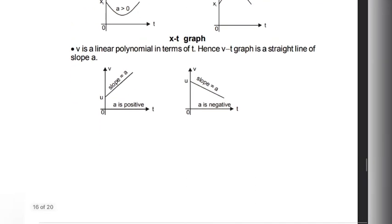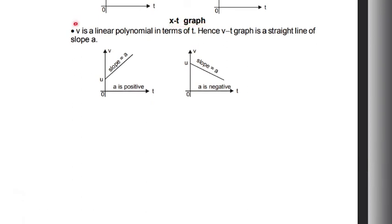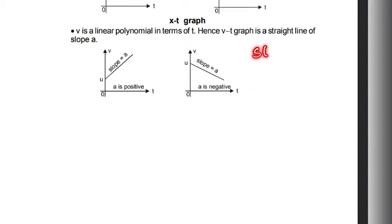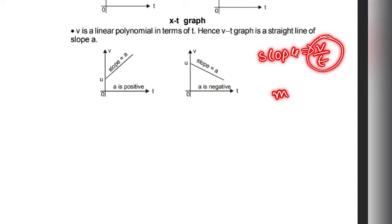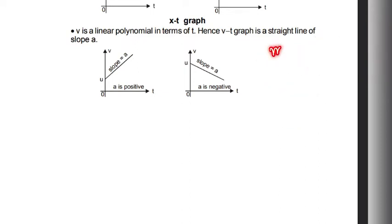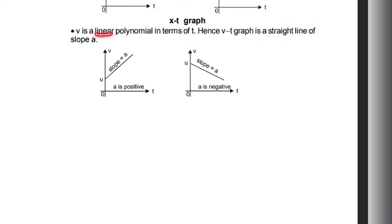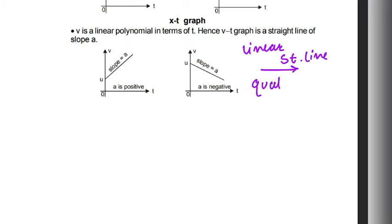Then we talk about the x-t graph and the v-t graph. If you want to find the slope of the v-t graph, you do Δv/Δt, giving units of meters per second squared, which is acceleration. Remember: a linear equation gives a straight-line graph, while a quadratic equation gives a parabola.